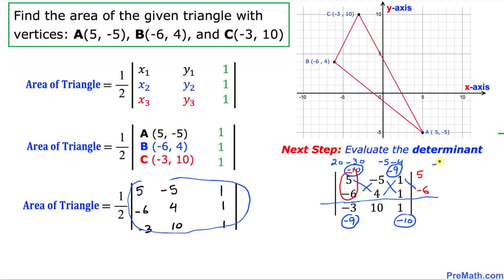1 times negative 6 is negative 6 minus 1 times 5 is 5, which is going to make a negative 11. So negative 11 is going to be here.